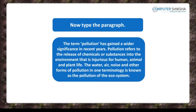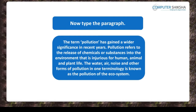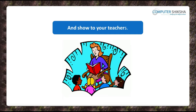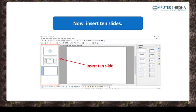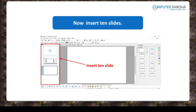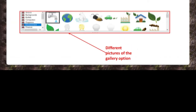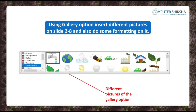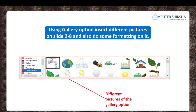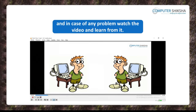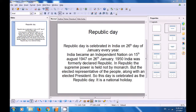Now, all of you go ahead and type out the paragraph being shown to you on the first slide, then show it to your teacher. Next, all of you insert 10 new slides. Then use the Gallery option to insert different pictures on slide 2 to slide 8, do some formatting on them, and show these to your teacher. In case of any problems, look at the video to learn from it. Watch the video and practice inserting new slides, making shapes using the Drawing Toolbar or the Gallery option, and formatting them with the Line and Filling Toolbar.